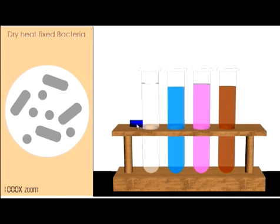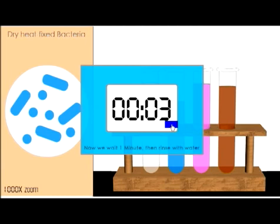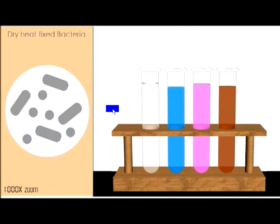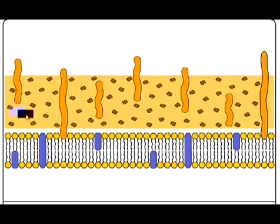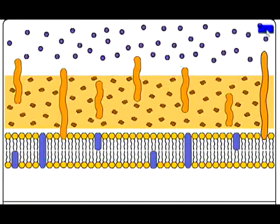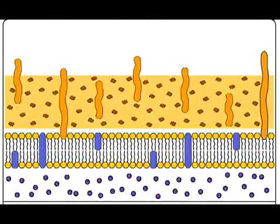Let's have a look at the gram stain technique. We'll start with a slide of dry-heat-fixed bacteria, then add crystal violet — a bluish or purple dye — and let that sit for about a minute. In gram-positive bacteria, the crystal violet works its way through the thick peptidoglycan layer and through the phospholipid bilayer, getting trapped beneath. In gram-negative bacteria, the crystal violet moves through the outer membrane, through the thinner peptidoglycan layer, and through the phospholipid bilayer, where it is also trapped.